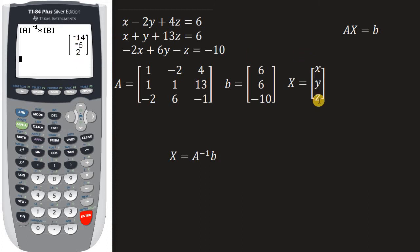See, that's x, y, and z. So that's negative 14 is x, negative 6 is y, and z is 2.